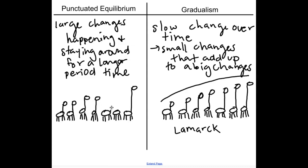Then another time, another giraffe is born with a slightly longer neck than the previously advantaged one, hundreds or thousands of years later. Again, all the other giraffes think this one looks freakishly tall. Then a flood happens and kills all the tree leaves on the bottom, making it easier to get food from the top of the tree. So this long-neck giraffe again has an easier time getting food, the others want to breed with him, and for a really long time that neck size persists. It just kind of randomly changes over time in these segments — that's punctuated equilibrium.